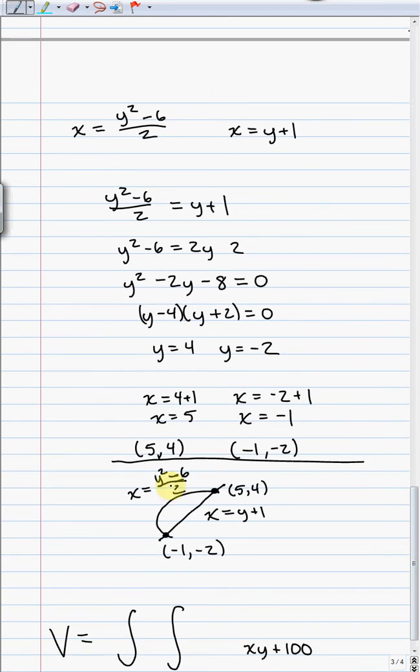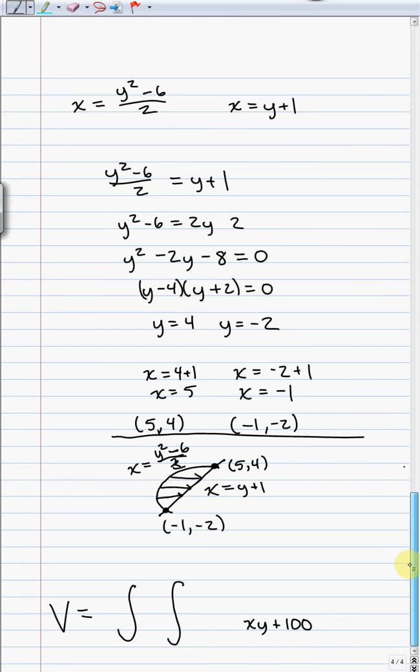So, that's what I'm going to do. I'm going to go dx first from the parabola to the line. So if I do dx first, that means that these have to be solved for x. Again, I had already done that in solving these down. So we go from left to right. x is equal to y squared minus 6 over 2. Over to the line, x is equal to y plus 1.